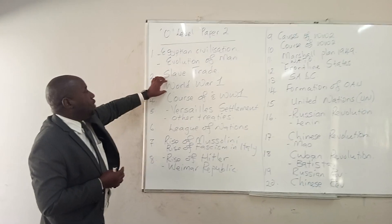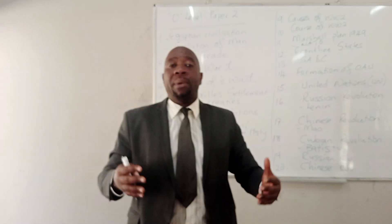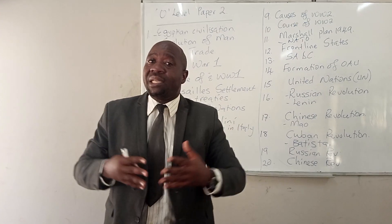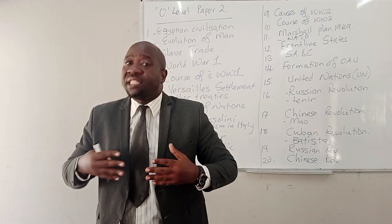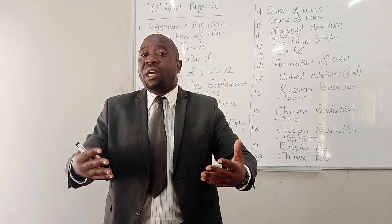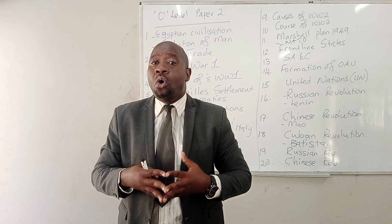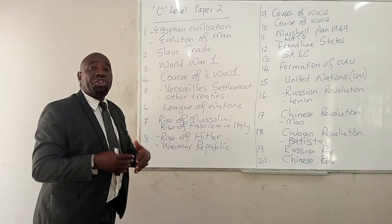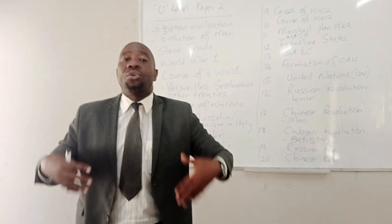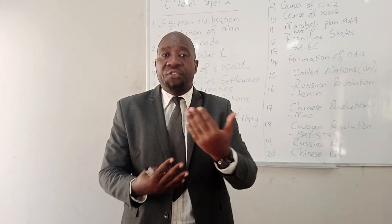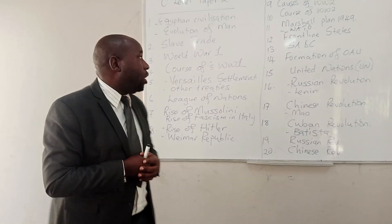Number three, they can ask you a question on World War One. The war started in 1914. They can ask you about the causes that led to World War One — the alliance system, militarism, colonial rivalry, the Sarajevo incident, the issue of nationalism, the Balkan crises, the first and second Balkan wars. So they can ask you on the causes of World War One. Number four, they can ask you on the course of World War One — what happened when European powers were fighting against each other.